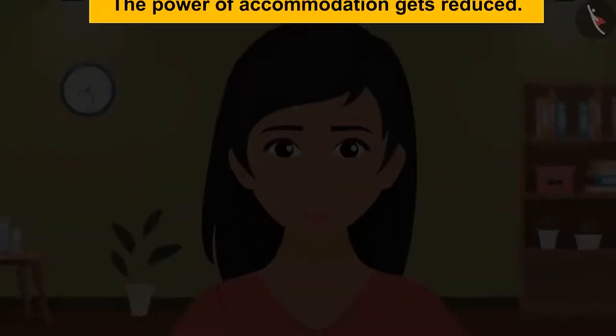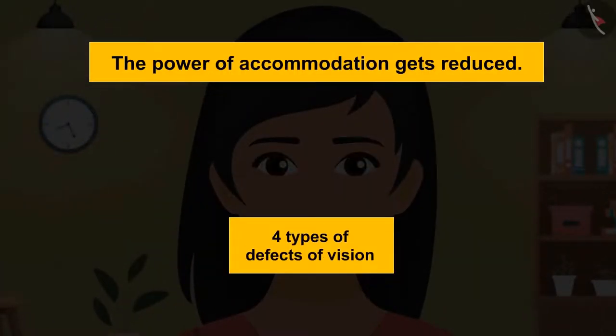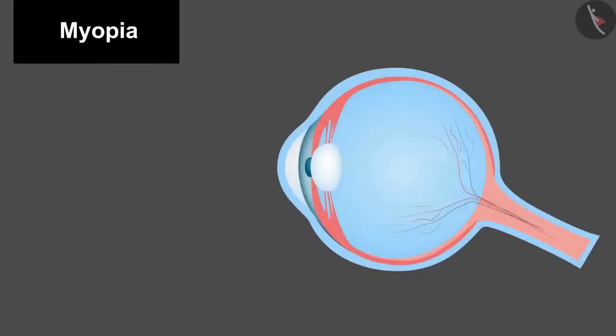One reason for the eyes to become weak is that the power of accommodation gets reduced. There are broadly four types of defects of vision. The first one is myopia, which is also known as near-sightedness.